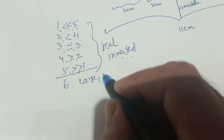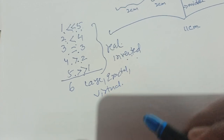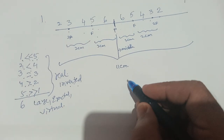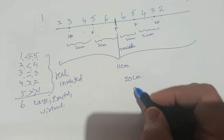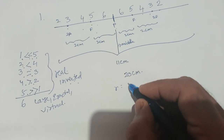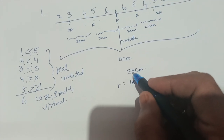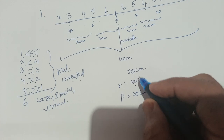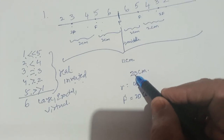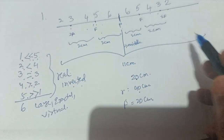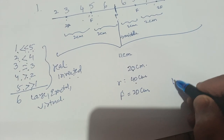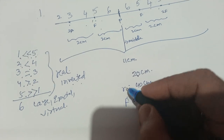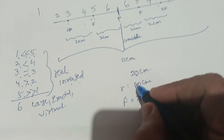And for position 6, it gives a large, erect, and virtual image. From this table we can very easily solve problems. For example, suppose the object is placed at 20 centimeters and the radius of curvature is 40 centimeters. The focal length is half the radius of curvature, so focal length equals 20 centimeters. Keeping the object at 20 centimeters means it is at position 5 — at f — so the image will be formed at infinity, real and inverted.